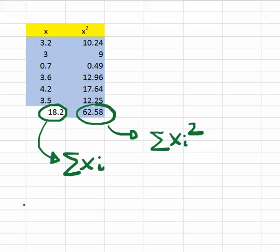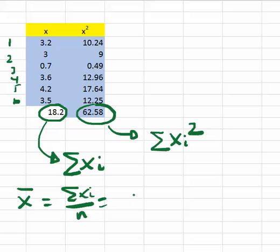And once we have that, we can calculate the mean, which is the sum of xi over n. So in this case, I have 1, 2, 3, 4, 5, 6. And this is just an example, but it works the same with the other data, just 18.2 divided by 6.